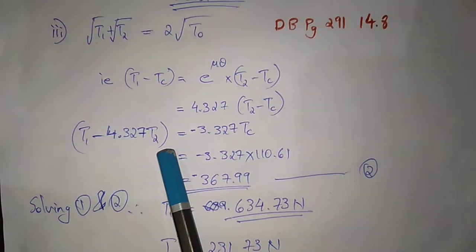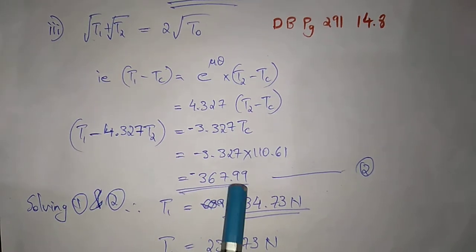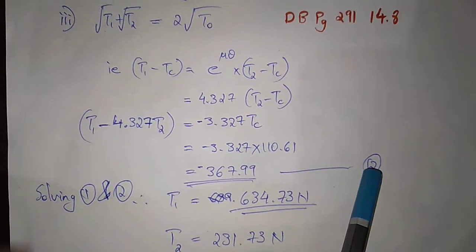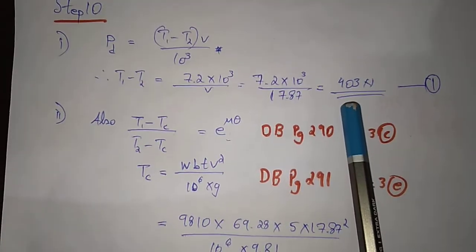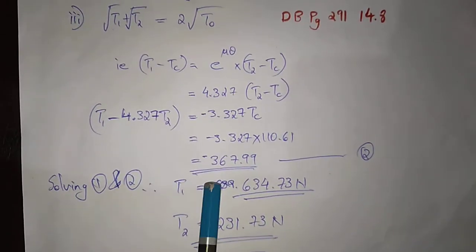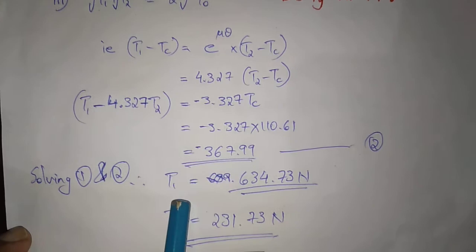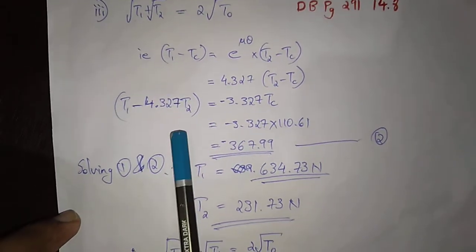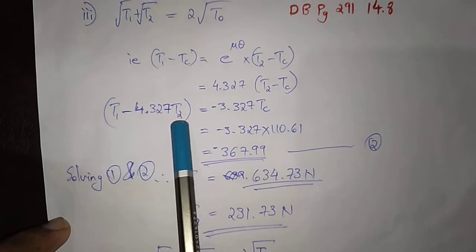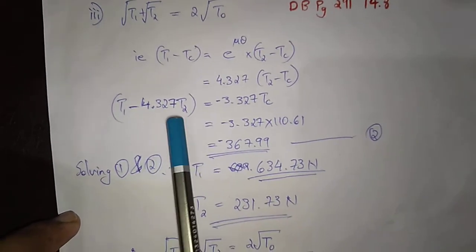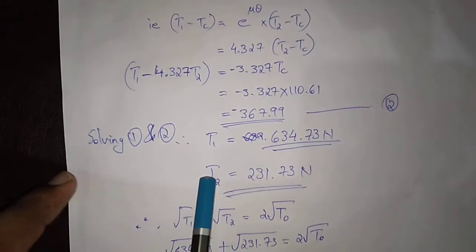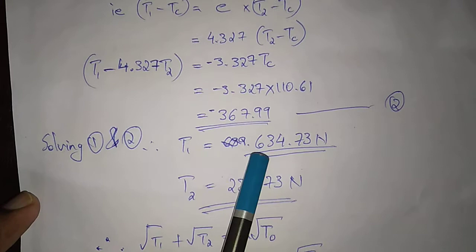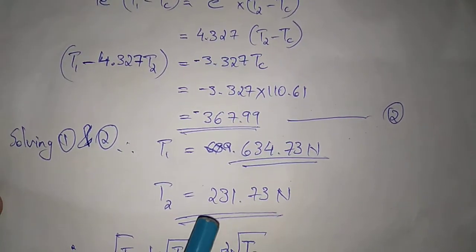Substituting into the equation for 4.327×Tc, this gives us T1 minus T2. Combining with equation 1, we solve simultaneously for T1 and T2. The results are T1 = 634.73 N and T2 = 231.73 N.